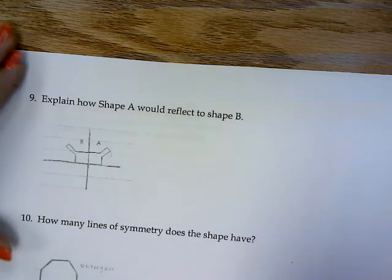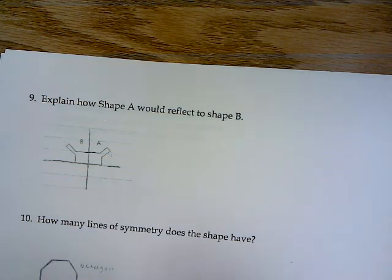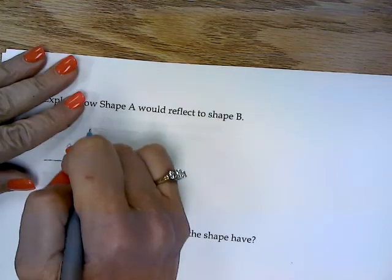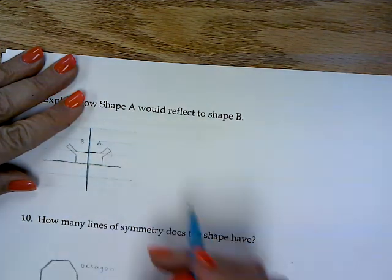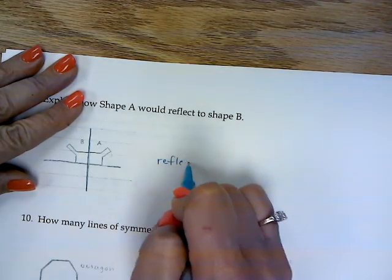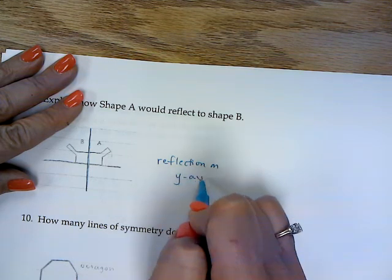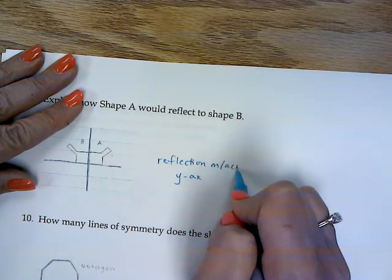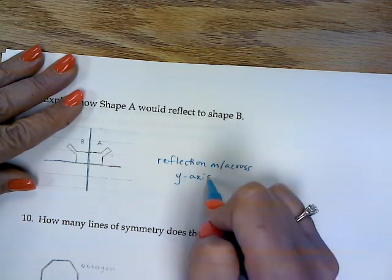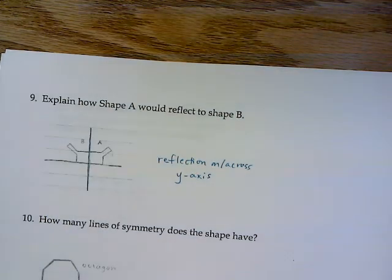Explain how shape A would reflect to shape B. Okay. If you look at it, here is my line of reflection. So it's just a reflection on the Y. Actually it has a cross. Reflected across the Y axis.